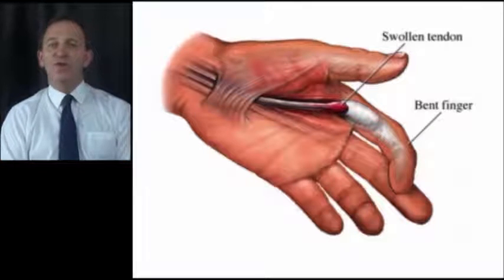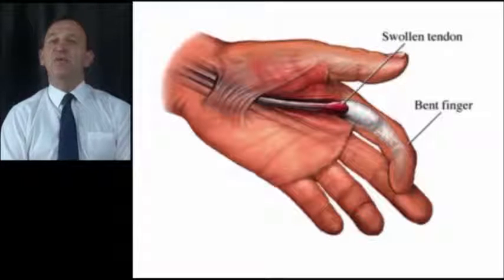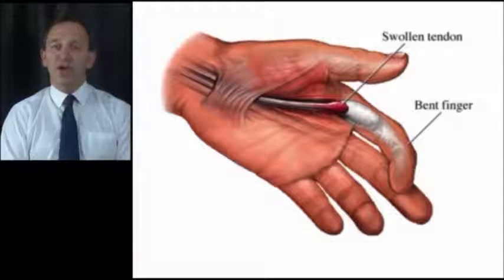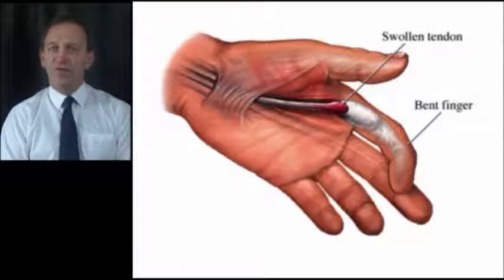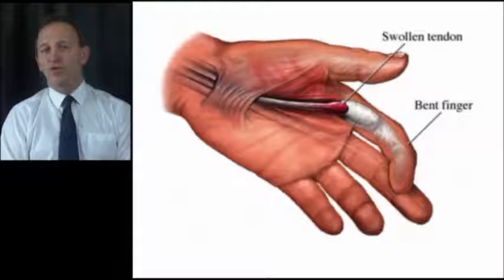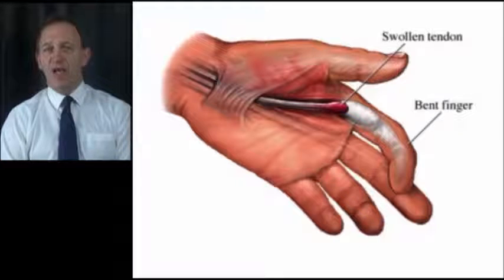When a finger sticks in a flexed position, especially overnight, it's likely to be due to inflammation of the flexor tendon. Injection of hydrocortisone within the sheath of the tendon can reduce the inflammation and result in free movement of the finger within a short time. Now we'll look at injecting trigger finger and De Quervain's tenosynovitis.